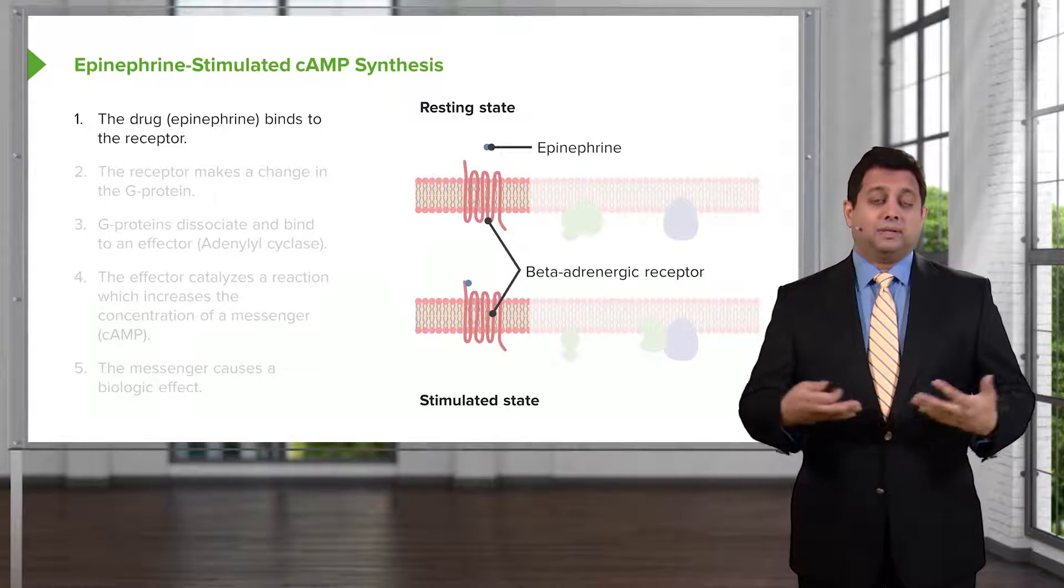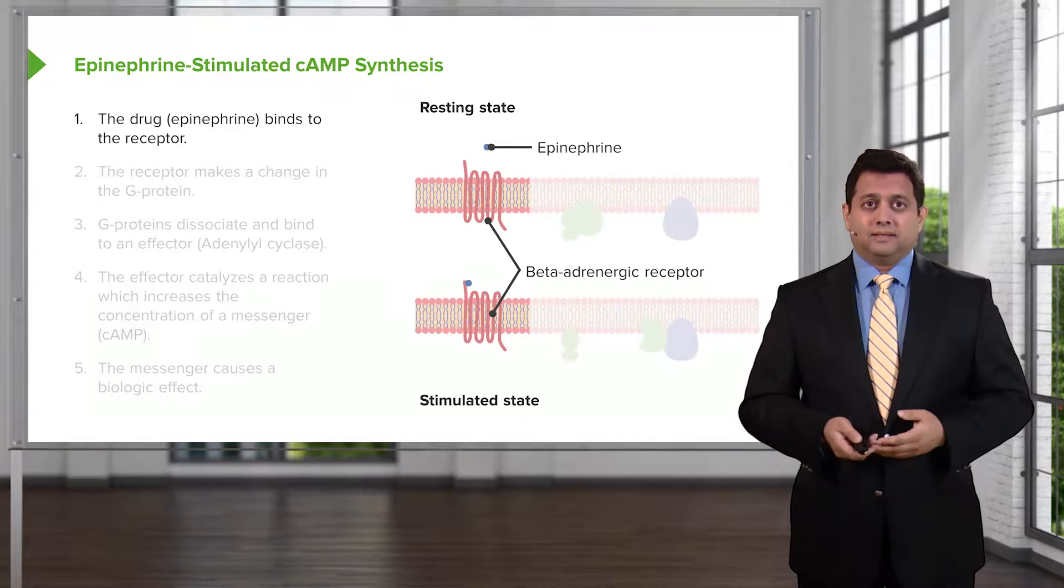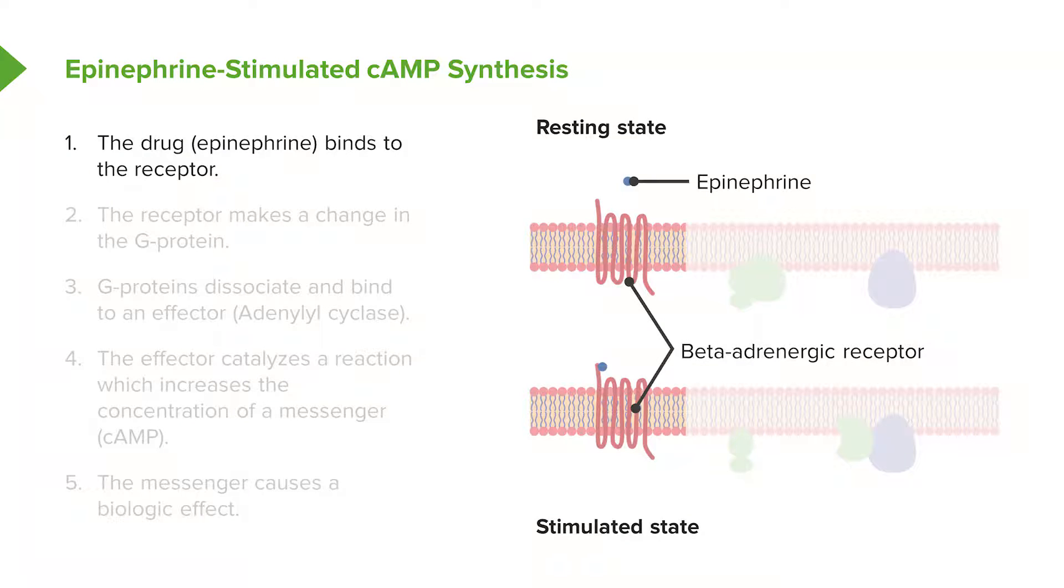So let's give an example of a G-protein-mediated event. Here's epinephrine, and it causes cyclic AMP synthesis within the cell. The first step is that the drug epinephrine binds to the receptor, and you can see the receptor is a transmembrane protein.